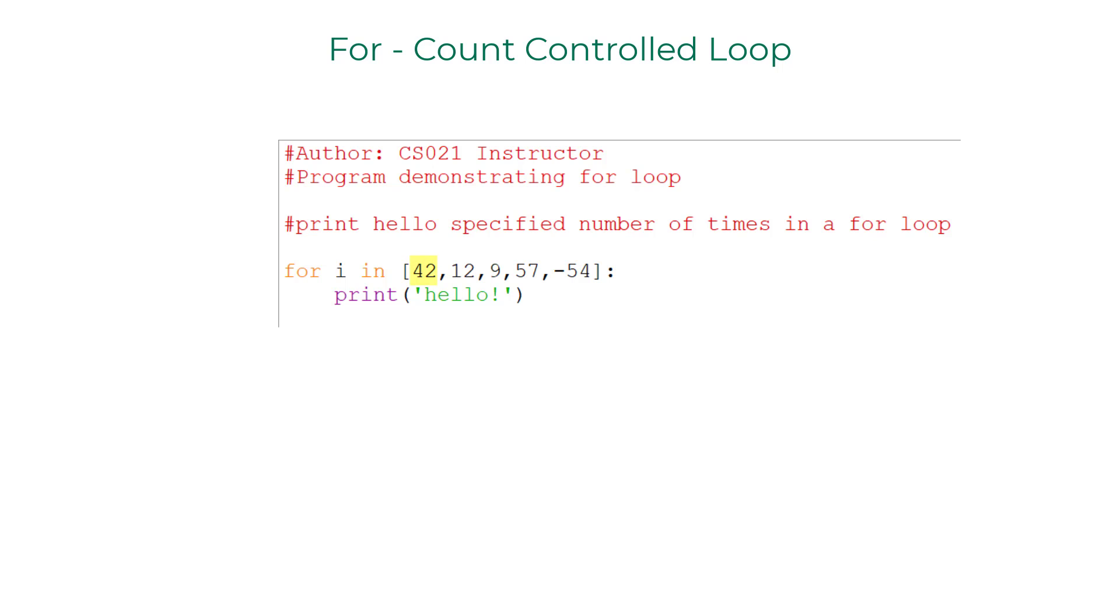The iterator variable picks a value, the loop iterates once and returns back to pick the next value. In total we would have five iterations, printing hello five times.